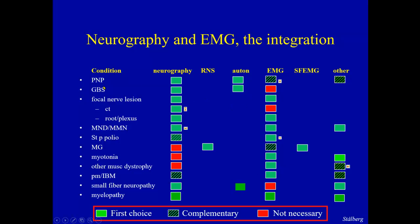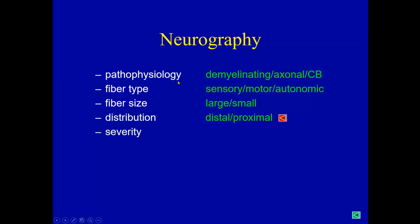When it comes to polyneuropathy, neurography is the most important test. We are able not only to report a conduction velocity of 37 meters per second, but many other parameters. We should try to find and report these in the final conclusion: the pathophysiology — namely demyelinating, axonal, and so on — which fiber types are involved, fiber size, distribution (distal or proximal), and to some extent the severity.